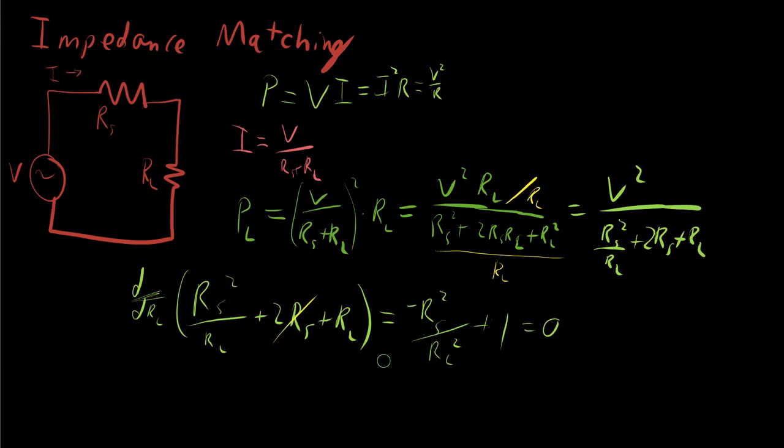And so if we're setting this equal to 0, then that means this negative sign goes away and we end up with an equation that looks something like this: we get RS squared over RL squared is equal to 1. We're saying that RS squared is equal to RL squared, and of course that has two solutions but there's no such thing as negative resistances so the only valid solution is RS equals RL.